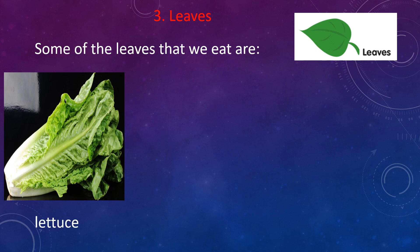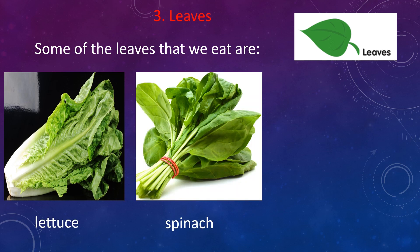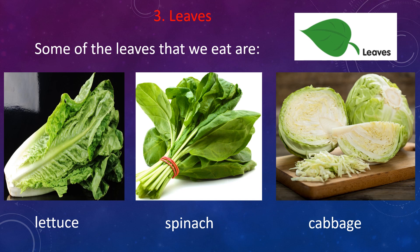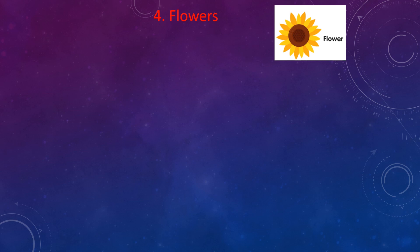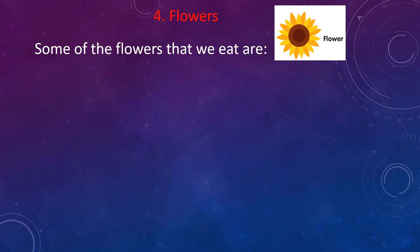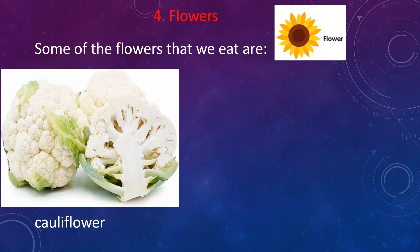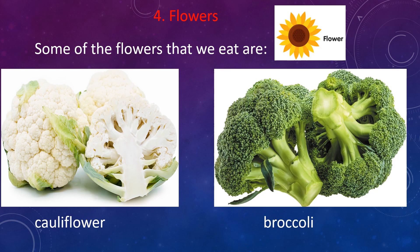Some of the leaves that we eat are lettuce, spinach, and cabbage — these are the leaves that we eat. Now for flowers, some of the flowers that we eat are cauliflower and broccoli. So cauliflower and broccoli are the edible flowers which you can eat.